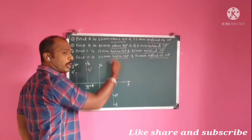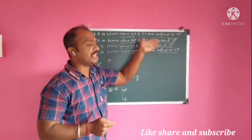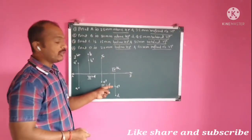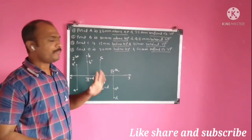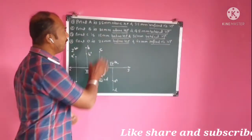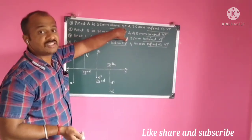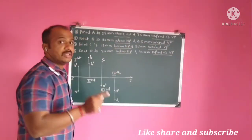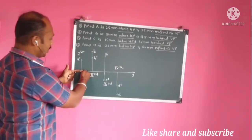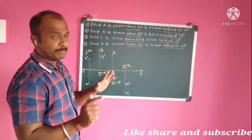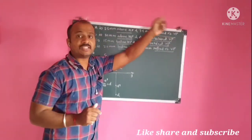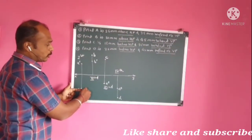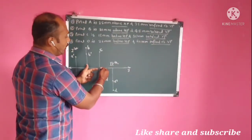When the point is below HP and in front of VP, it lies in the fourth quadrant — both front view and top view will be below XY line. It is very simple. Always remember: the distance with respect to HP is marked in the front view only — above HP means above XY line, below HP means below XY line. The distance with respect to VP is plotted in the top view — in front of VP means top view is below XY line, behind VP means top view is above XY line.